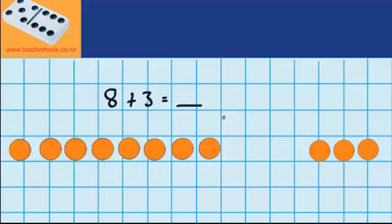So we know over here that these were 8. So that must mean that this is 9, 10, and 11. So 8 plus 3 equals 11.